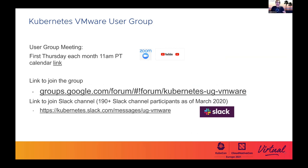The next user group meeting will be June 3rd, at least in the North American time zone. You can go to the Kubernetes community calendar — there's a link in this slide — to get a conversion to your own local time zone and add it to your calendar. You become a group member by joining the mailing list shown in the link here, and here's the link to the group's Slack channel.